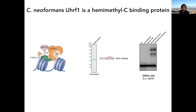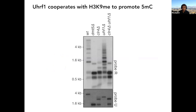We then identified a UHRF1 homolog in the genome — just the SRA domain, predicted to recognize hemimethylated DNA. Expressing it in bacteria and doing mobility shift assays showed it binds hemimethylated oligonucleotides but not fully methylated or unmethylated oligos. Knocking it out gives a partial phenotype, and combining it with the CLRC4 knockout makes the CLRC4 phenotype somewhat stronger.